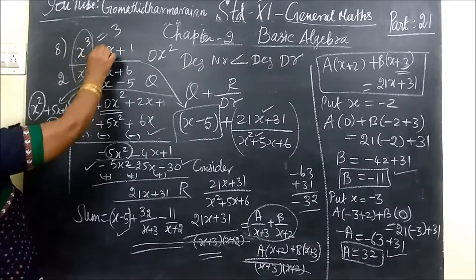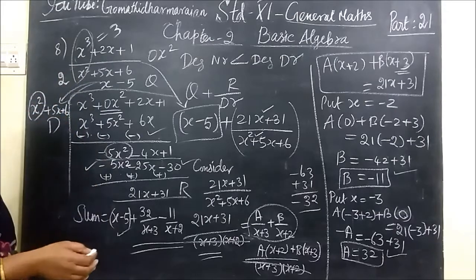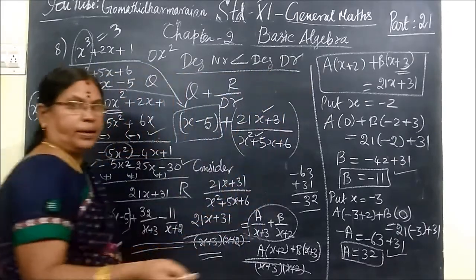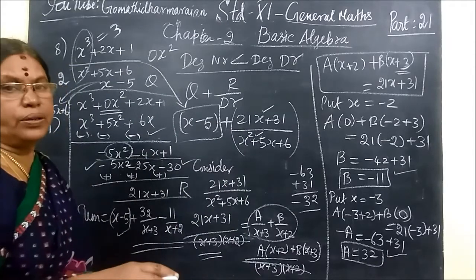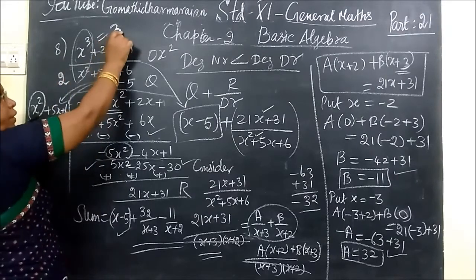For time saving I have written this. Here the degree of numerator is 3 and the degree of denominator is 2, but we know degree of numerator should be less than degree of denominator. Last class we have seen, degree of numerator here, we have degree of denominator but here it is greater.